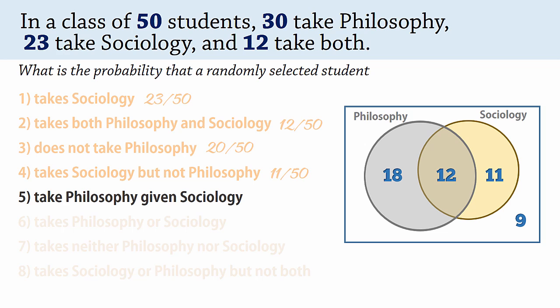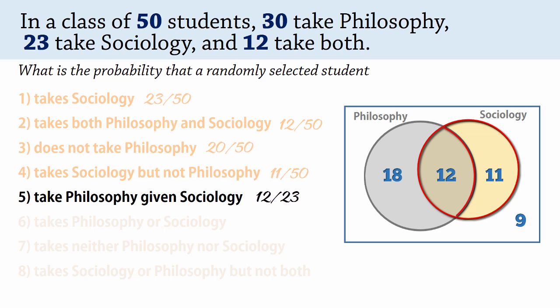In number 5, we want the probability that a student takes philosophy given that the student takes sociology. This is basically asking: out of the students taking sociology, that is, given sociology, what proportion also takes philosophy? Since out of the 23 students taking sociology, 12 are also taking philosophy, the probability is therefore 12 divided by 23, or 0.52.